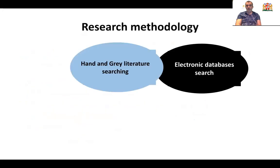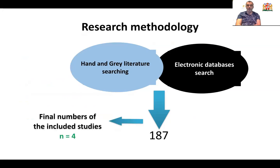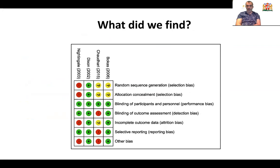During our search, which included electronic database, hand, and grey literature search, we found 187 studies eligible for this systematic review. However, after applying our strict PICO criteria, only four studies met our criteria and were included in our systematic meta-analysis. Using the Cochrane risk of bias tool, we found two studies with low risk of bias, one study with low risk of bias, and one study with unclear risk of bias.